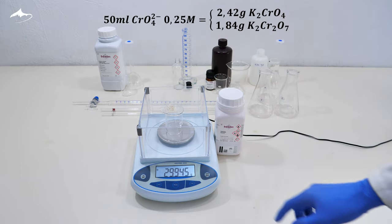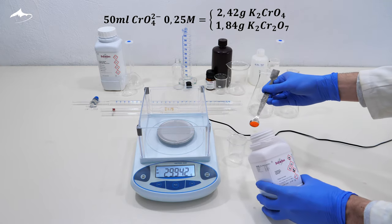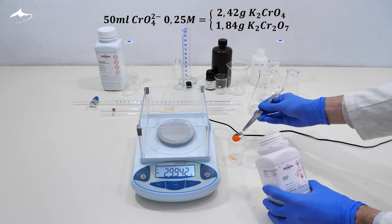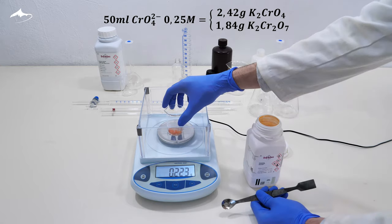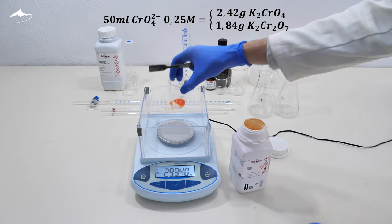To prepare 50 milliliters of chromate ion 0.25 molar solution, approximately 1.84 grams of potassium dichromate needs to be weighed. I don't have a chromate salt, but dichromate can also be used instead, with a little modification you will see later.